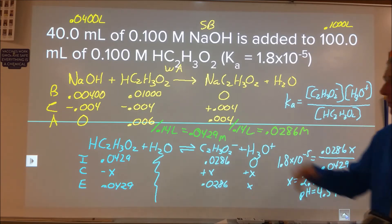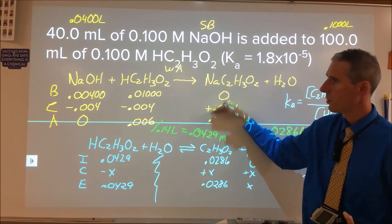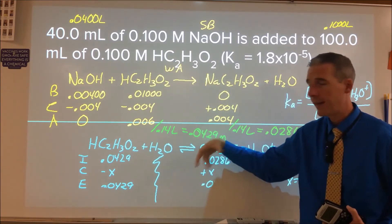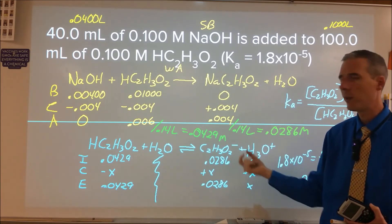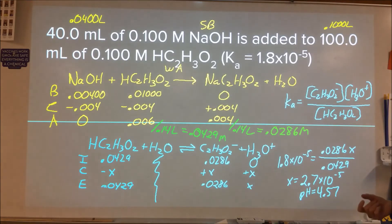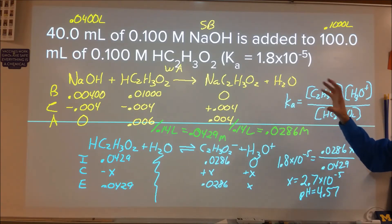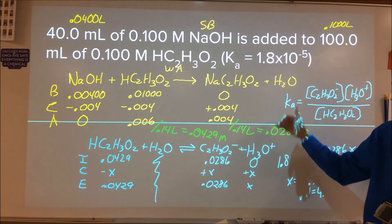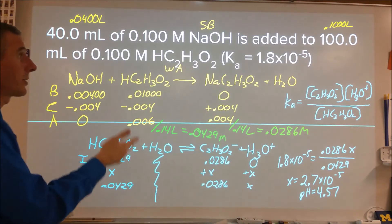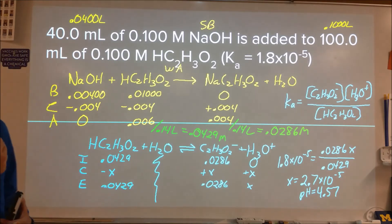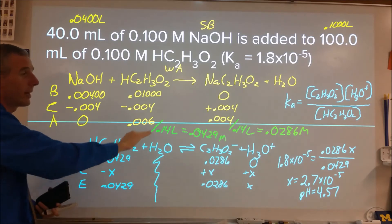In this problem, we organized the work by first doing a stoichiometry neutralization reaction, then taking the products, finding their concentrations, and using them to do an equilibrium analysis of weak acid and water. By organizing in that framework, you have a clear path: identify what you know how to do. Without that, this can be a very messy process.